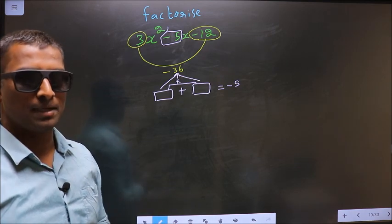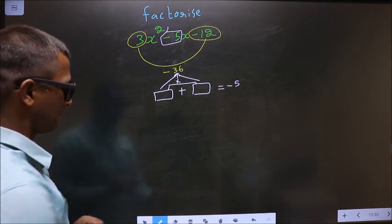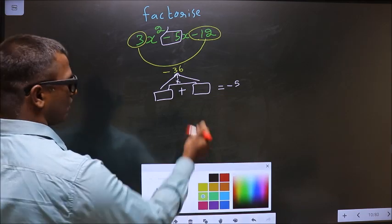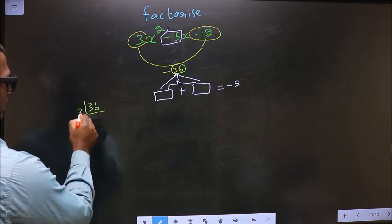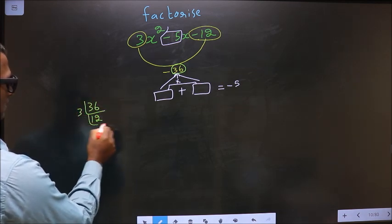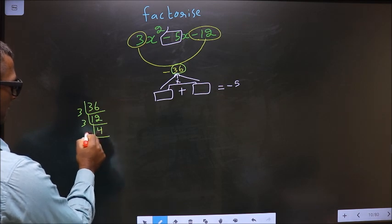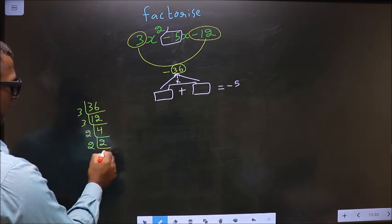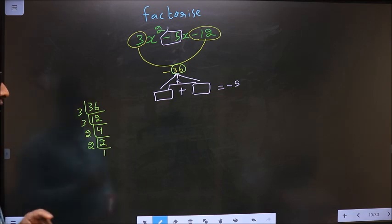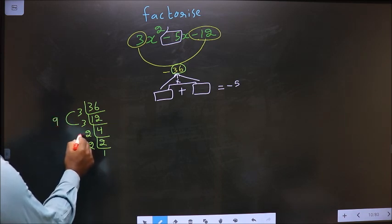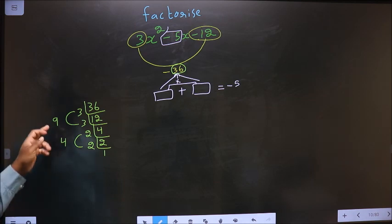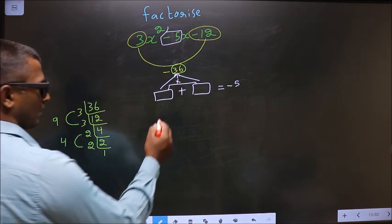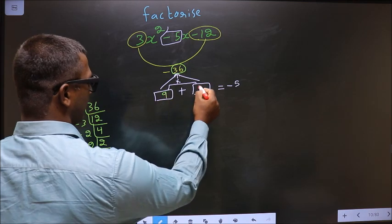Now to get those two numbers we should take LCM of 36 starting with 3. 3 into 3 is 9, 2 into 2 is 4. 9 minus 4 is 5, 9 into 4 is 36. So you write here 9 and here 4.